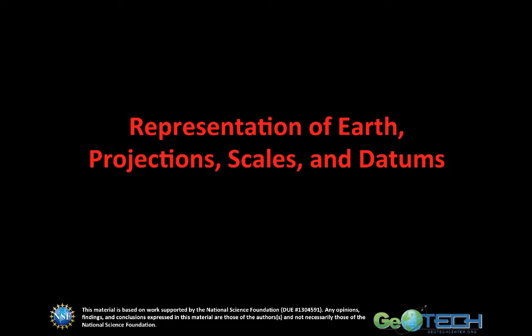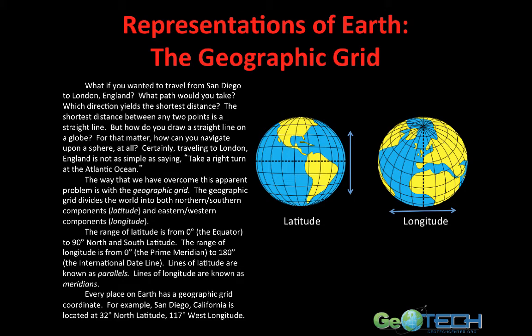One of the more daunting tasks in the geographical sciences is trying to figure out the best way to take this relatively large sphere that we live on and project it onto a relatively small two-dimensional plane that we can study and analyze. Let me give you a very quick thought question: what if you wanted to travel from San Diego, California to London, England? What path would you take? Which direction yields the shortest distance? Now, typically the shortest distance between any two points is a straight line, but how do you draw a straight line on a globe? How can you navigate upon a sphere at all?